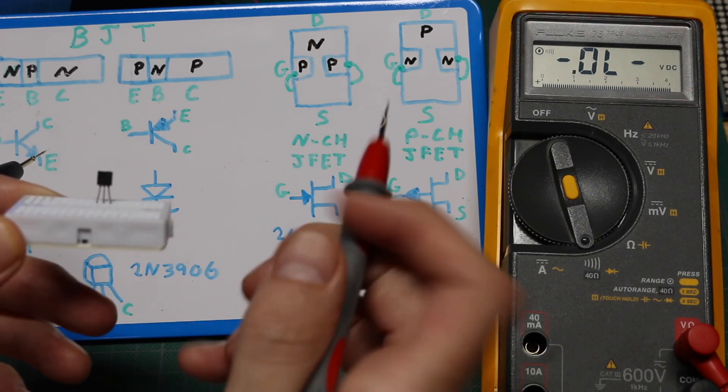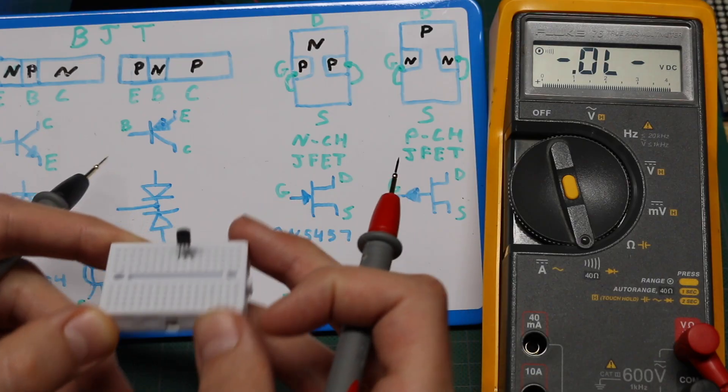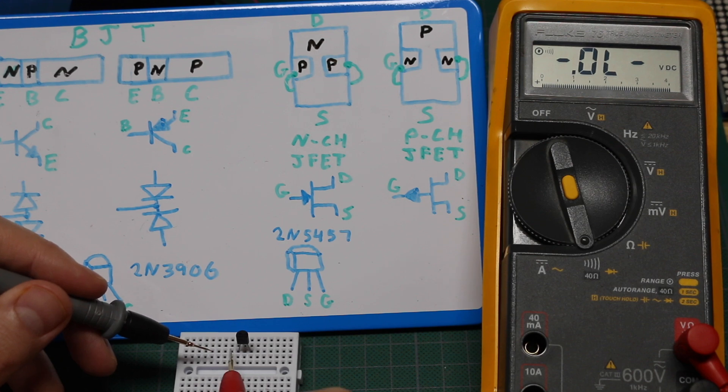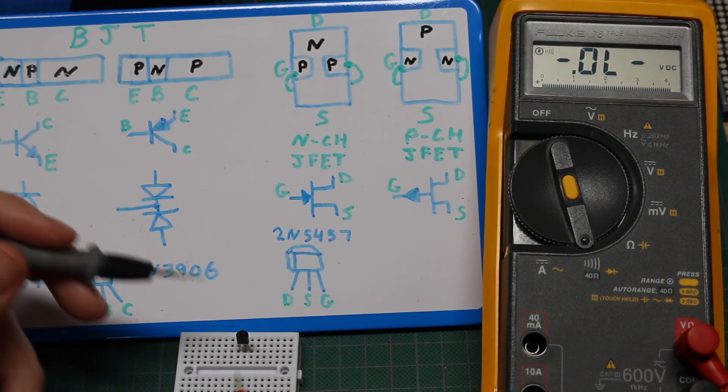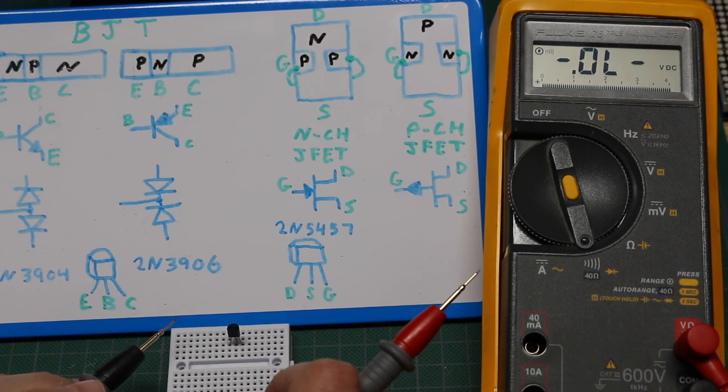Now that we know how to tell which pin is which on a BJT, what if we had one that we're not sure what the pinouts are, or even if it's NPN or PNP, and we don't even know from left to right which is base, emitter, collector. So let's just start probing pins and see what we come up with.